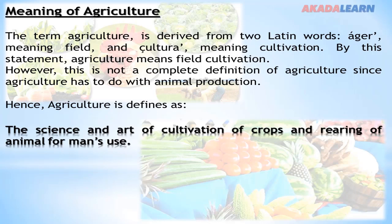So we can now differentiate between the meaning and definition of agriculture. When it comes to meaning, agriculture was derived from two Latin words, ager and cultura, which simply means field cultivation. But when it comes to the definition of agriculture, agriculture is the science and art of cultivation of crops and rearing of animals for man's use.